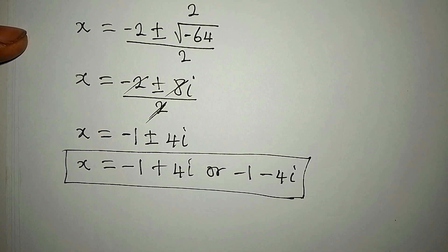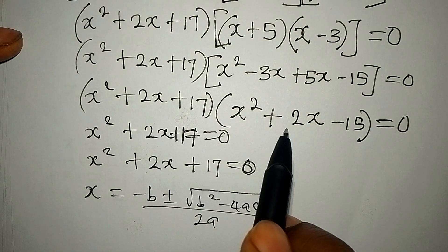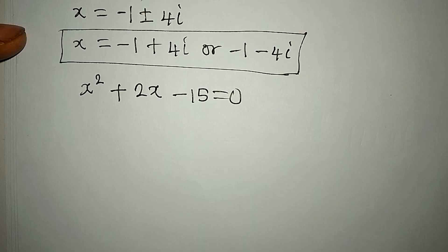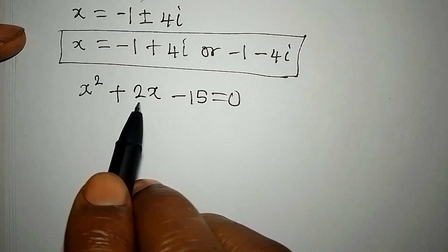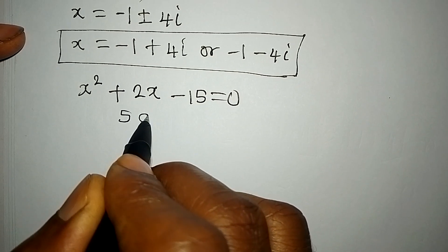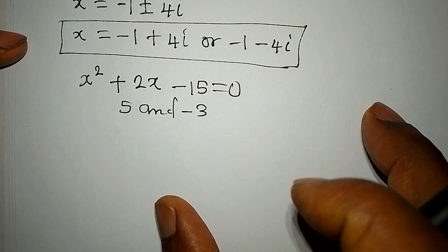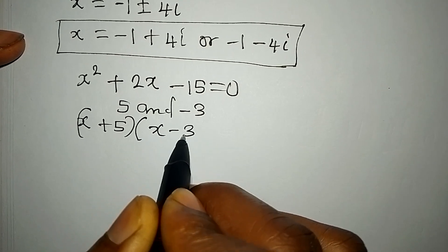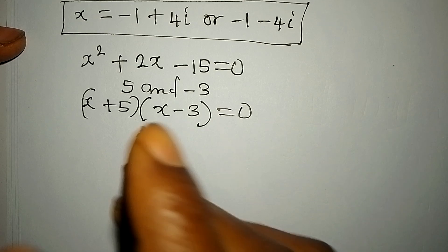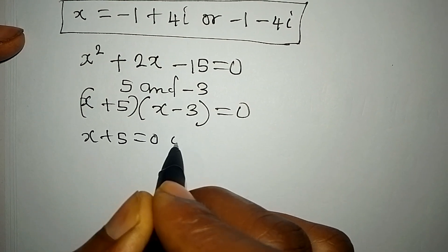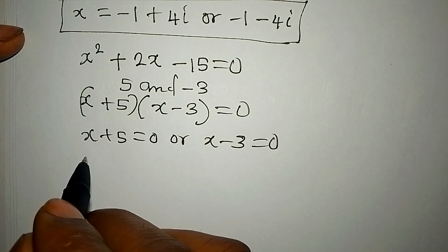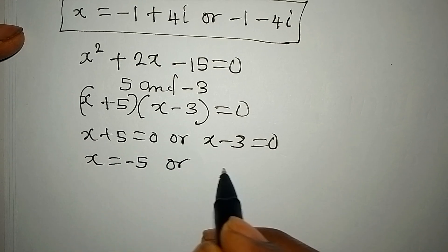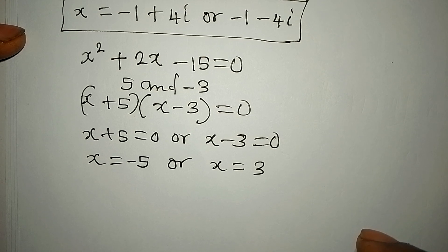Now we need to deal with the other equation to get the remaining two solutions. The equation x² + 2x - 15 can be factorized: two numbers that multiply to -15 and add to 2 are 5 and -3. So the factors are (x+5)(x-3) = 0, giving x = -5 or x = 3.